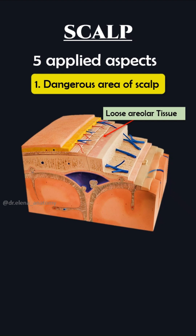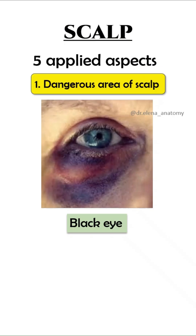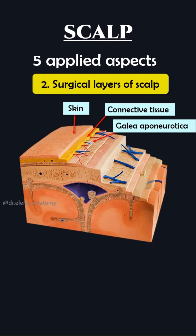The five applied aspects concerned with the scalp are: the fourth layer is considered the dangerous area of scalp and can lead to black eye. The first three layers are considered the surgical layer of scalp.